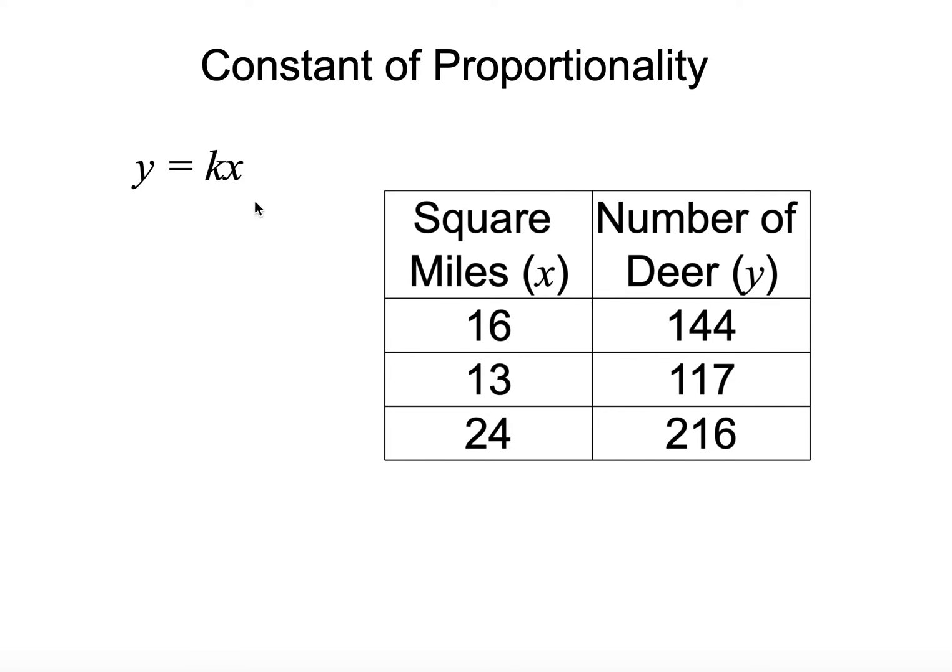All right, so what they've done is they put in 16, and they got 144. They put in 13, they got 117. They put in 24 for x, and they got 216. But we want to know, what is k? So the way we can do that, as you see here, you take x times k equals y. Well, we can do the opposite. We can do y divided by x, and that's going to get us k.